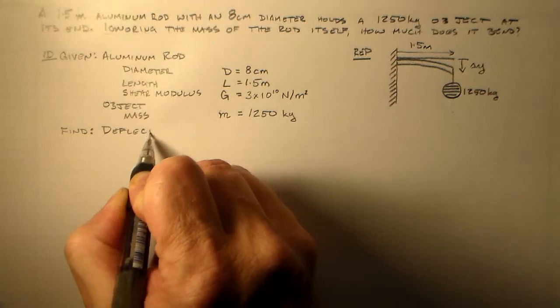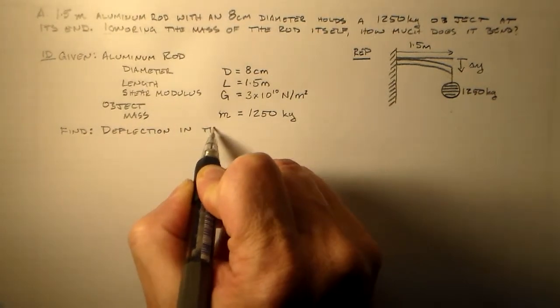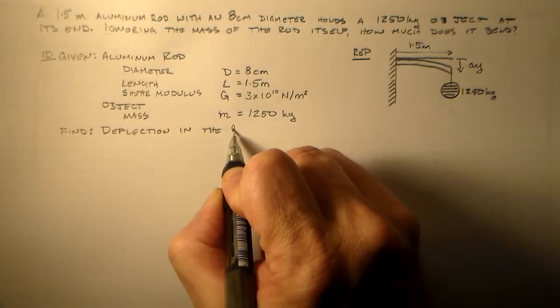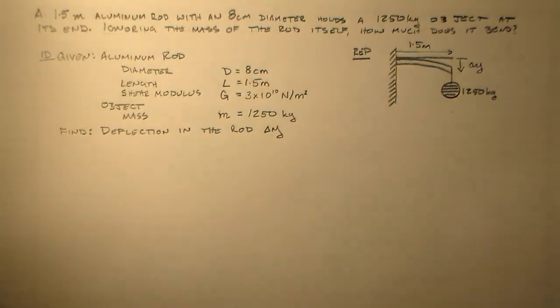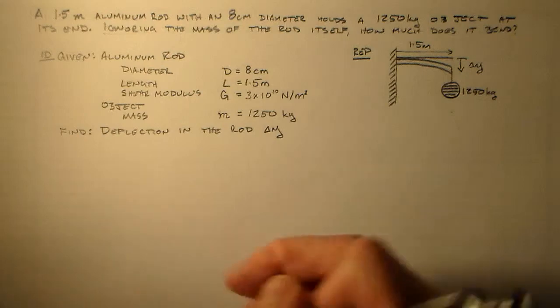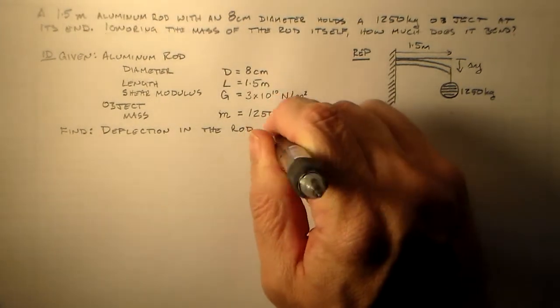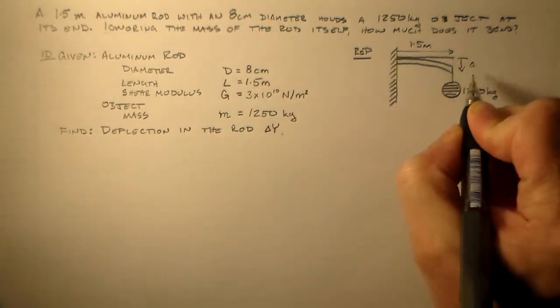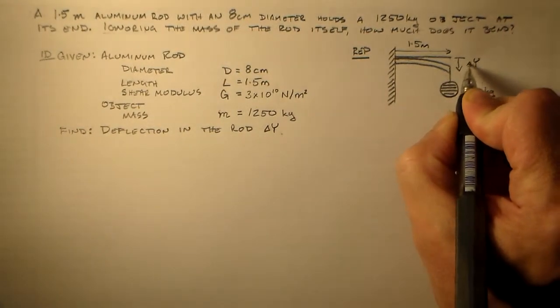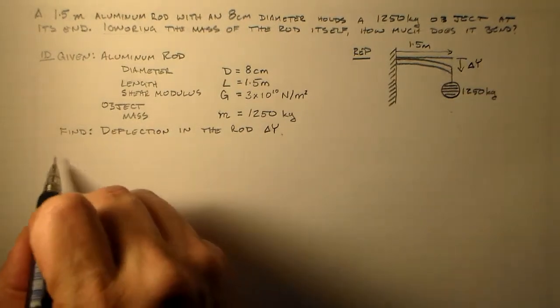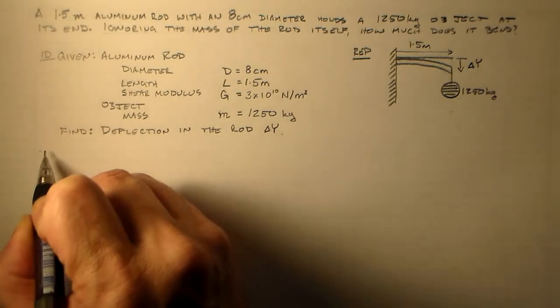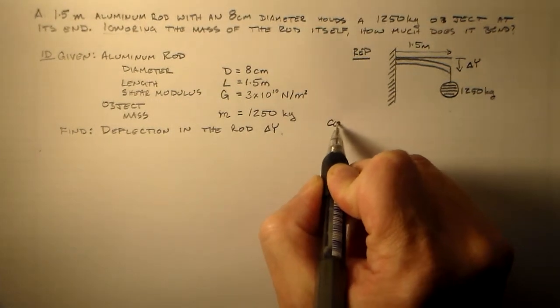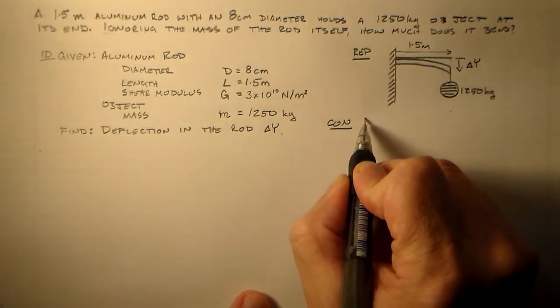Don't really need it because it's such a small problem, but still, it's probably a good idea to get used to using different symbols for different objects or just finding some way to differentiate between the objects with your notation. Notation is all up to you. And what do I want to find? I want to find the deflection in the rod.